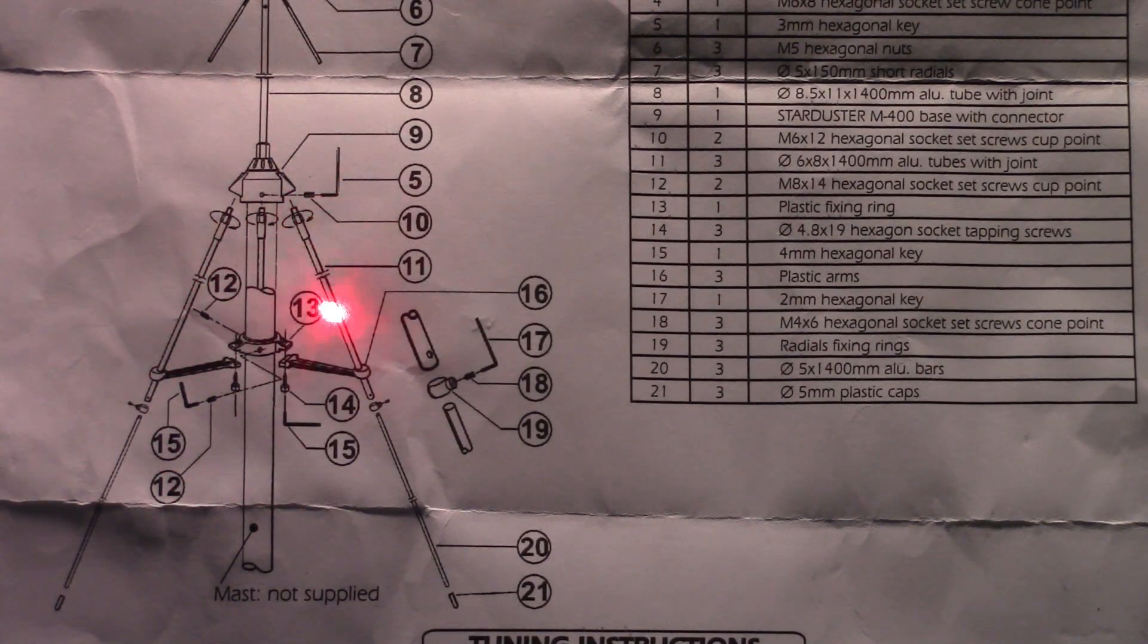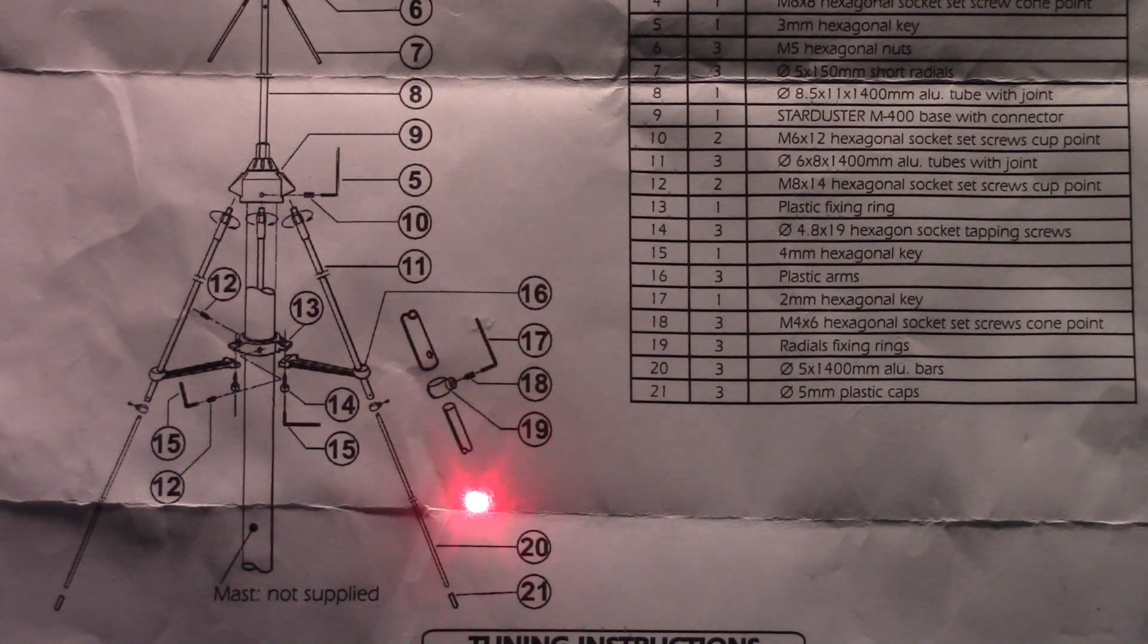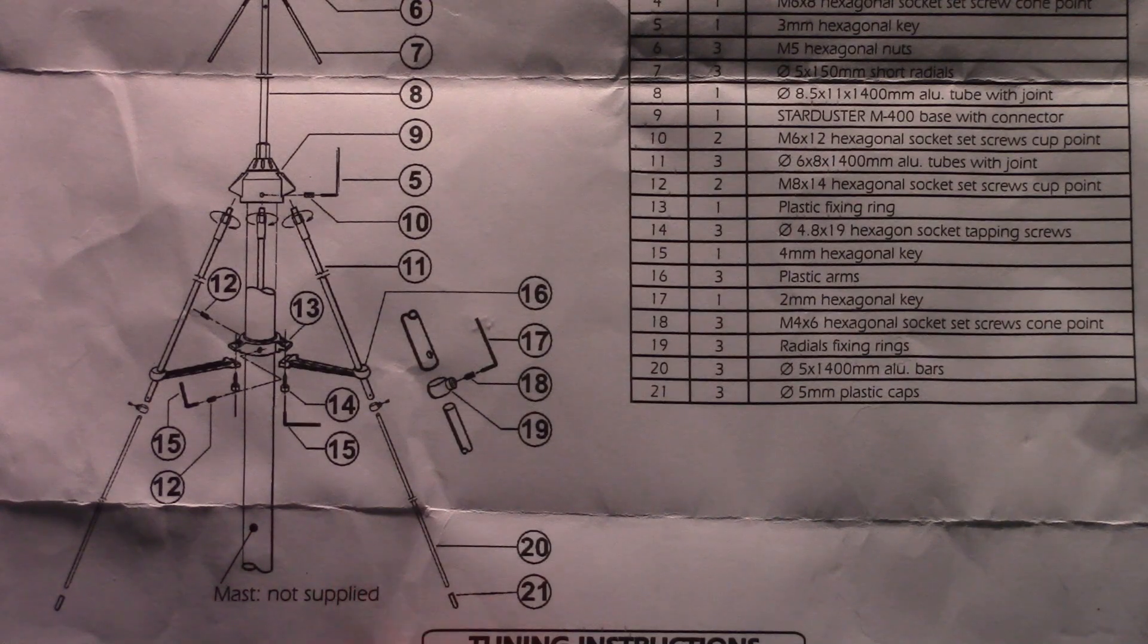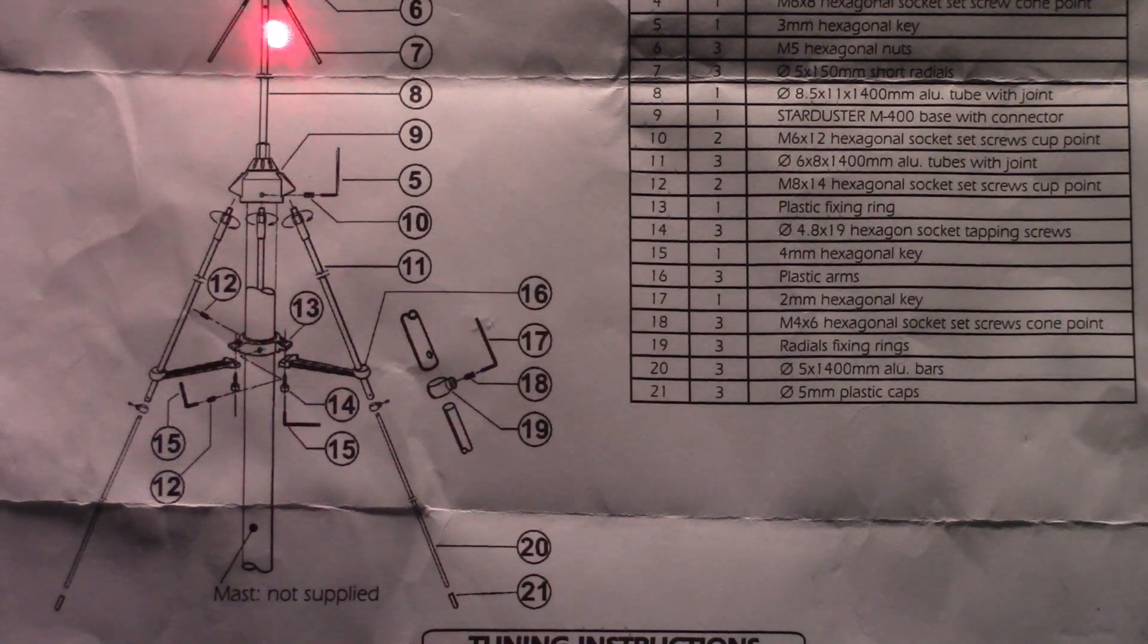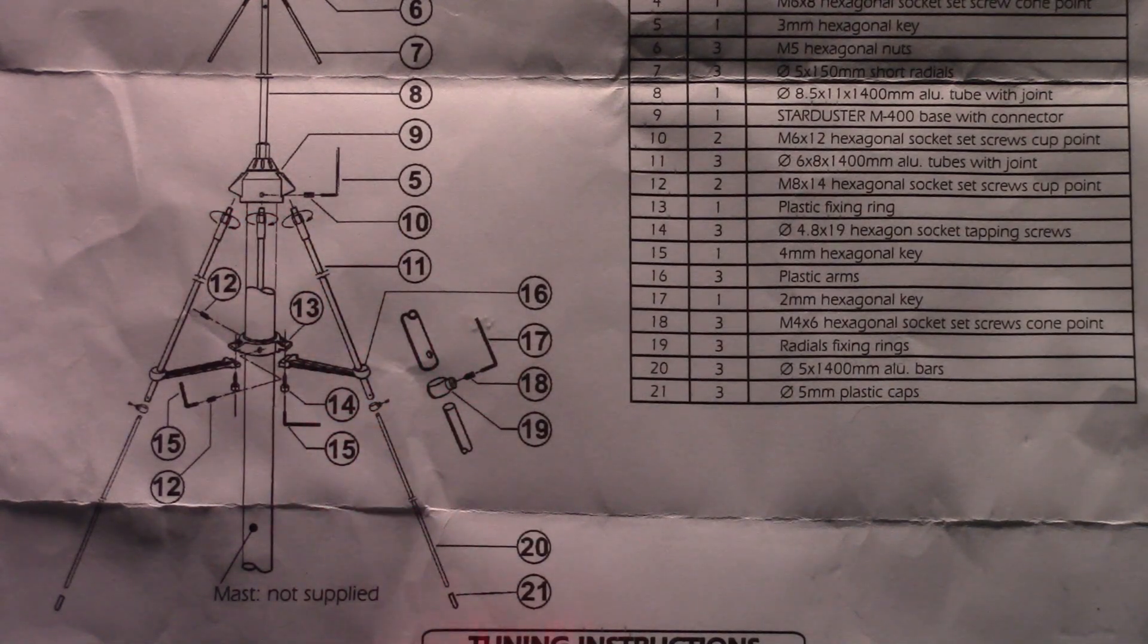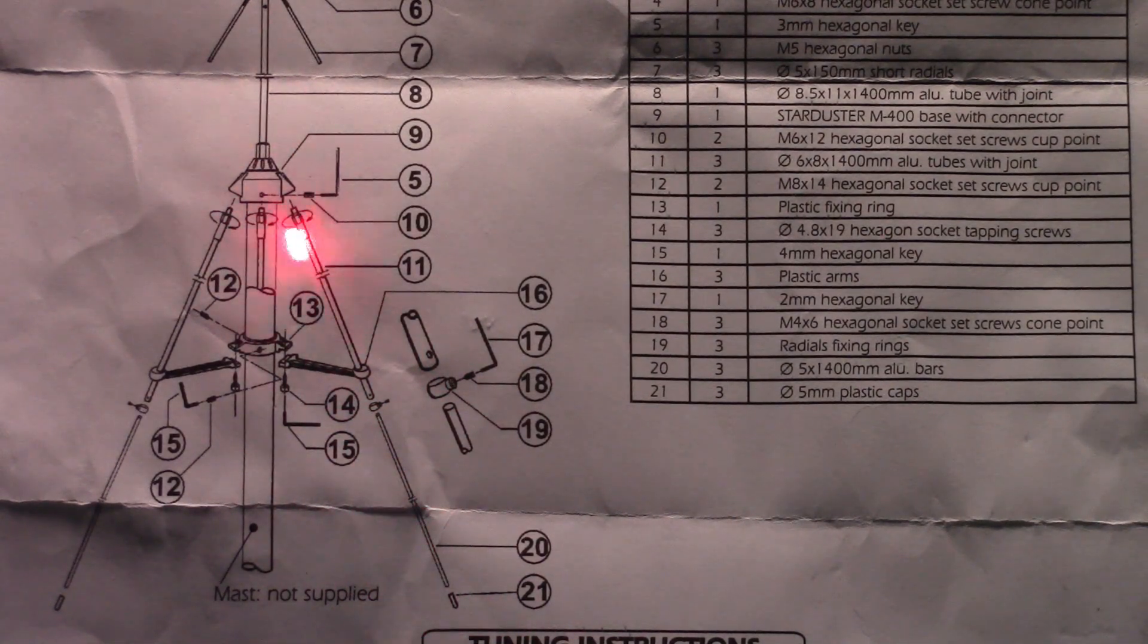Also, another little issue I came across during the final assembly is this collar right here that goes down here on your ground radials. There are two sections to this, just like the top part. The bottom section slides up inside the upper section so that you can adjust it for the frequency that you're trying to tune the antenna to.